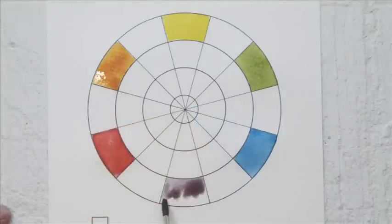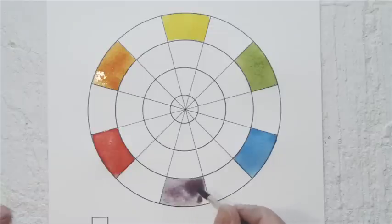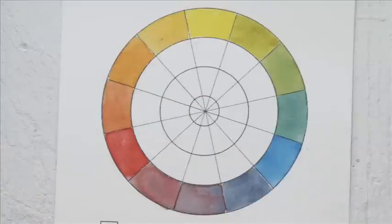When these are done, the remaining squares can be mixed and filled in. They'll be a yellow-green, a blue-green, a yellow-orange and a red-orange, a violet and a purple. When this is done, the outer ring of the colour wheel is complete.